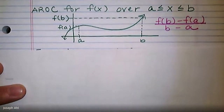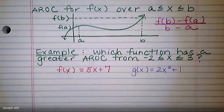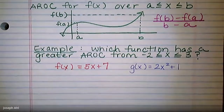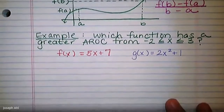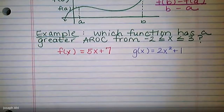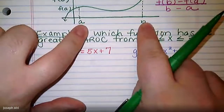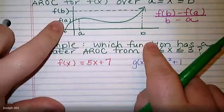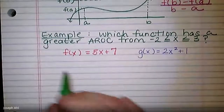Our first example: which function has a greater average rate of change (AROC) from negative 2 to 3? I'll give us two functions to consider: f(x) = 5x + 7 and g(x) = 2x² + 1. To figure out which has the greatest average rate of change from negative 2 to 3 — those are your a and b values — we have to figure out f(b) and f(a). Let's call negative 2 our a and 3 our b, and calculate f(3) and f(−2).